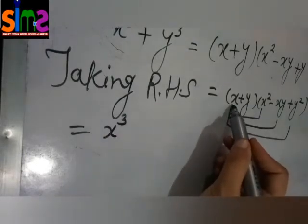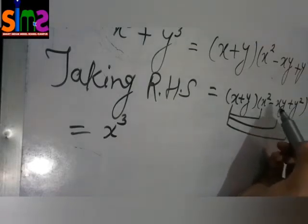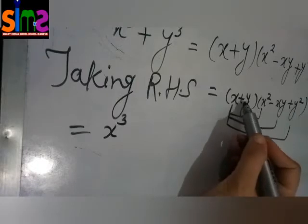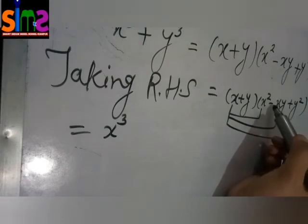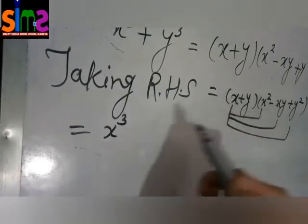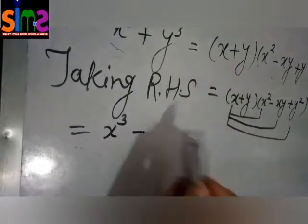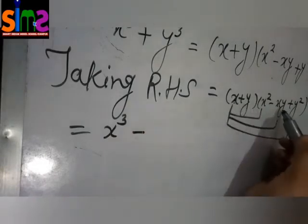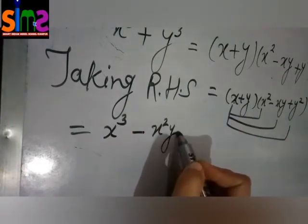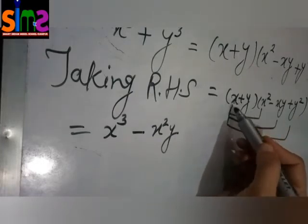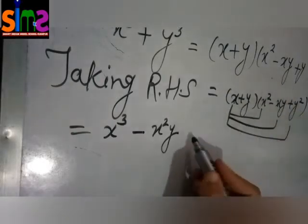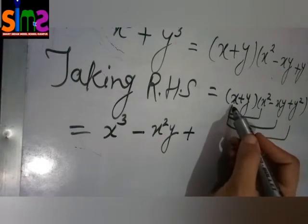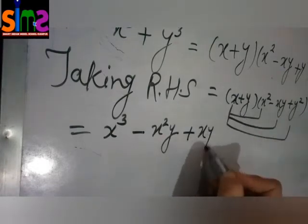When we multiply this x to this xy we will get x square y. But as you can see that this x is positive and this xy is negative. So plus and minus when multiplied they make minus. Now when we multiply this x to this y square, this is positive, this is also positive. So plus plus make plus. When we multiply this x to this y square we will get xy square.